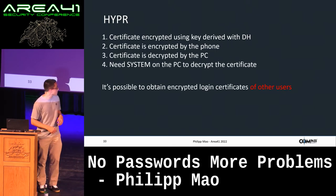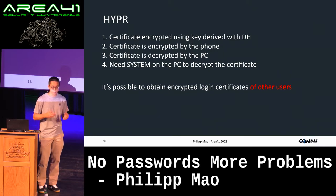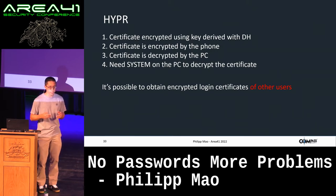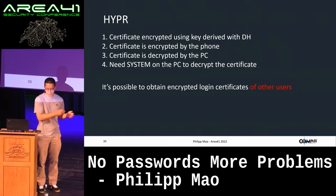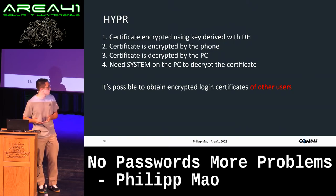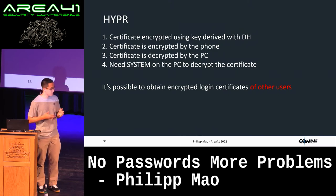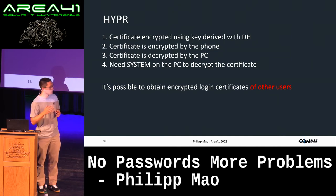There's a shared key between the smartphone and the computer established via Diffie-Hellman key exchange when the user scans the QR code. The smartphone encrypts the certificate, the service on the computer decrypts it. To decrypt it, you either need to be SYSTEM on the computer or compromise the smartphone. This seems secure — but there's a crack: you can get encrypted login certificates of other users, which I'll show can be exploited to login as another user.